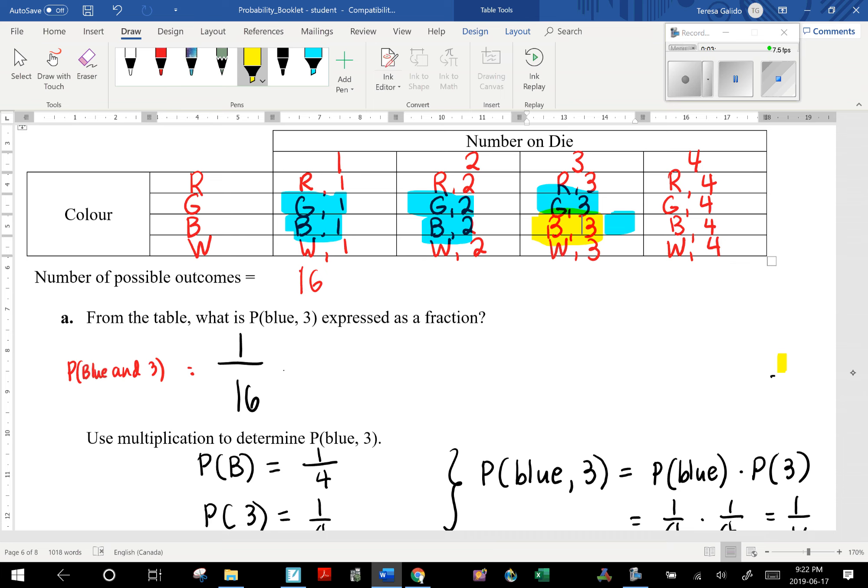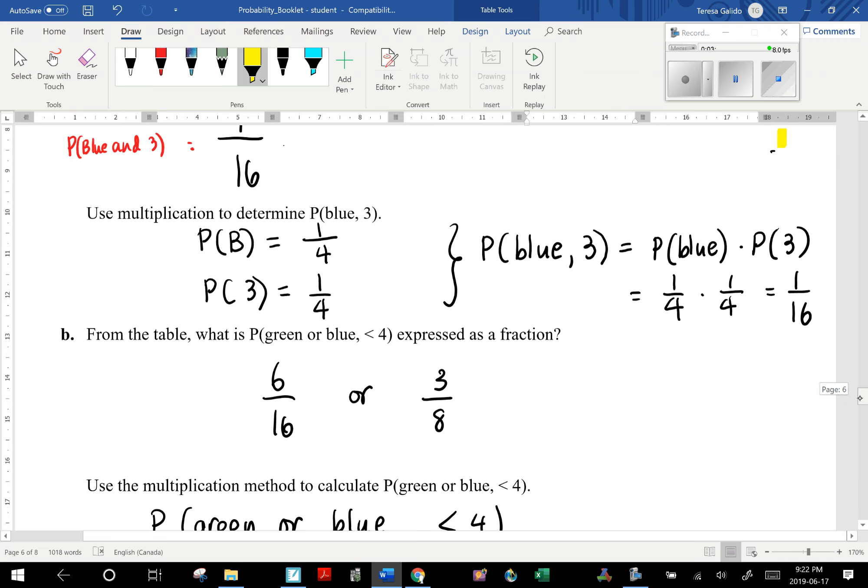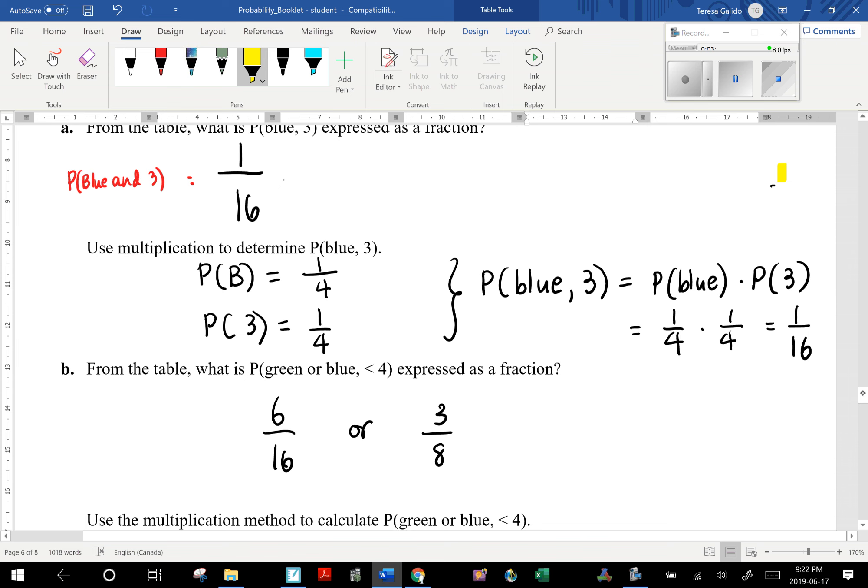This, this, this, and also this one that's yellow highlighted. I put the highlighter on the side here. So it looks like there are 6 out of 16 possibilities, or in simplified form, 3/8. So the probability of getting a green or blue and a number less than 4 is 6 out of 16 or 3/8.